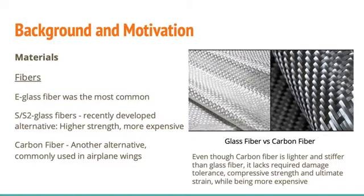Composites are the major material source of blade manufacturing, consisting of fibers and matrix materials. E-glass fibers were the most common fibers used in blades until the development of S and S2 glass fibers. S-glass fibers provide higher strength compared to E-glass fibers but are more expensive. Another fiber alternative is carbon fibers, which possess much higher stiffness and lower density compared to glass fibers. Although carbon fiber is lighter and stiffer than glass fiber, they have relatively low damage tolerance, compressive strength, and ultimate strain, and are also more expensive than E-glass fibers.